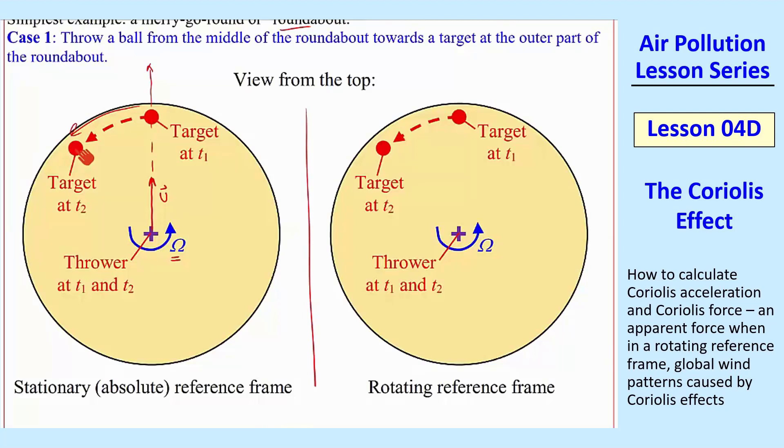So at time T1, he's here. Time T2, he's here. So from his point of view, it seems like the ball is veering over to the right. And so if this is the view from the rotating reference frame. So again,